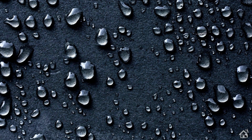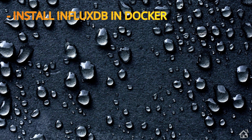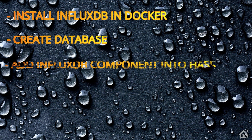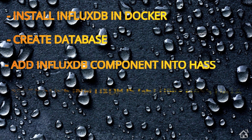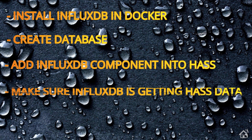Let's do a quick run through everything we're going to cover in this video. For starters, we're going to install InfluxDB in Docker. Once we get that up and running, we will connect into our Docker container and create our database for Home Assistant. Once we have that database created, we are ready to add our InfluxDB component into Home Assistant. And as a last step, we want to make sure that we're seeing that Home Assistant data in our InfluxDB database. Let's get started.